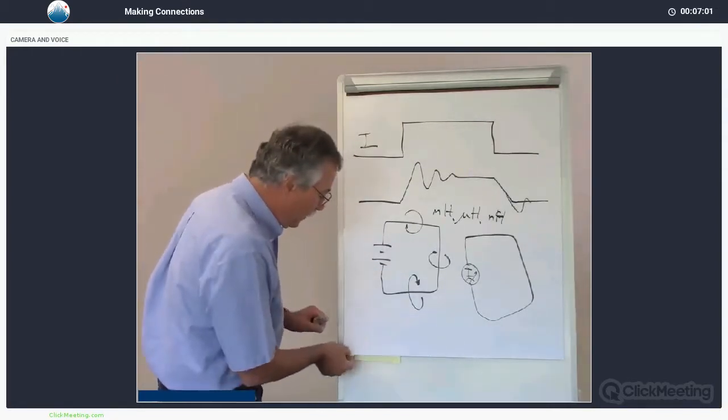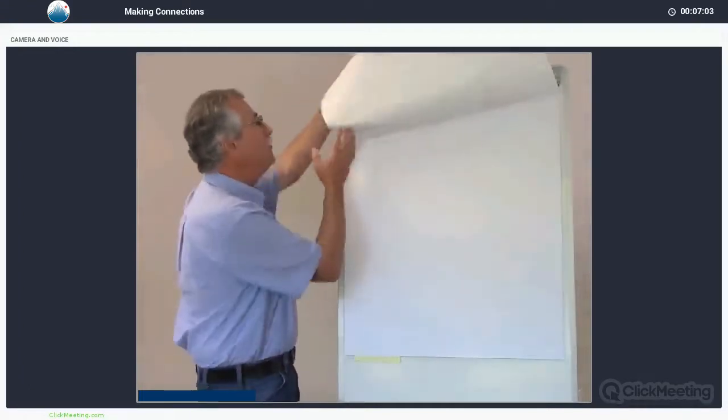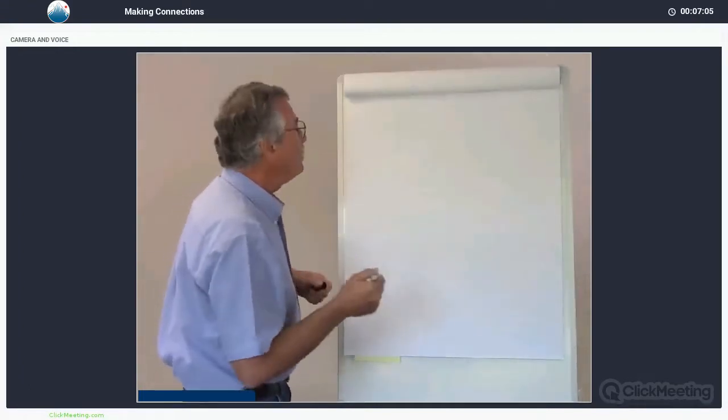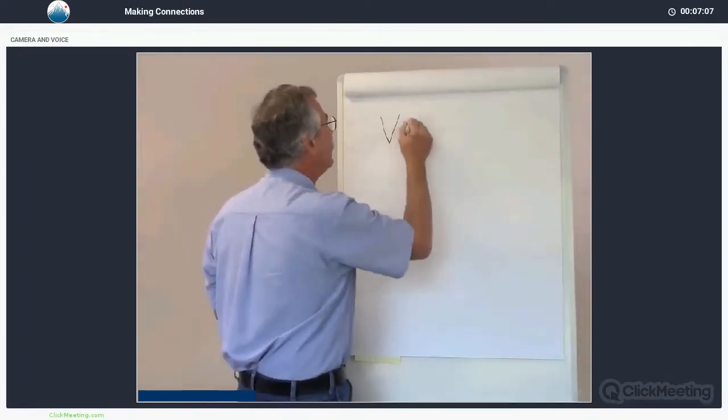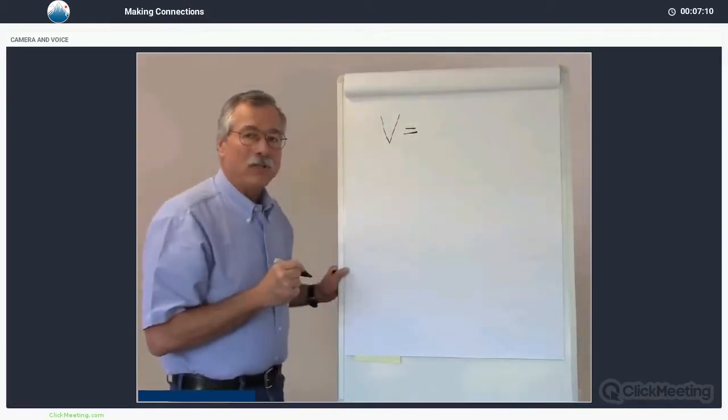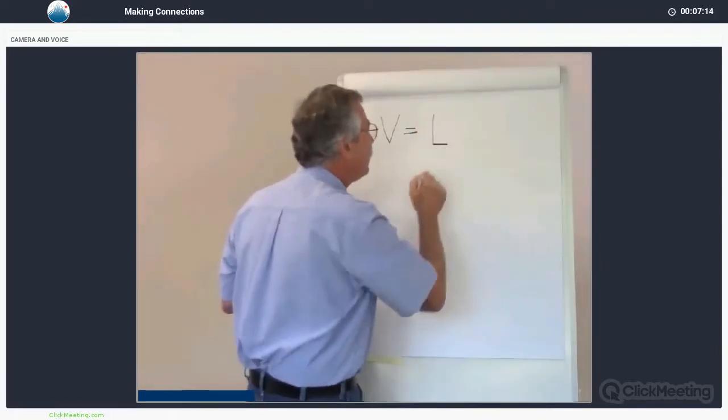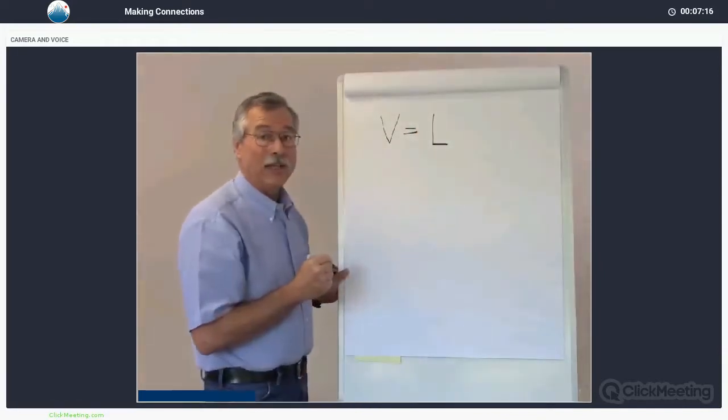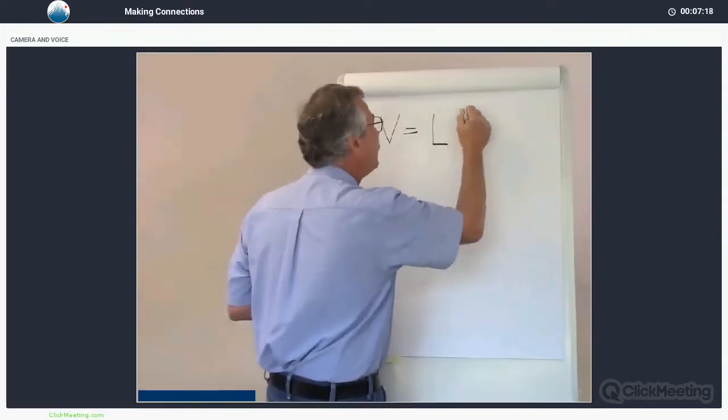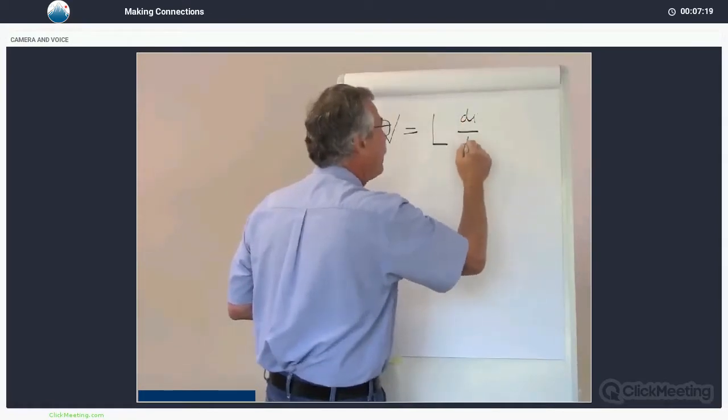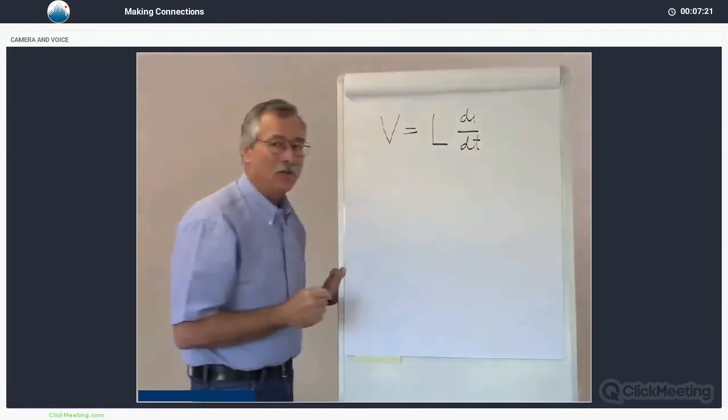There is a formula and it's the only one we're going to throw at you today that is extremely important. The amount of voltage that we induce in a circuit is equal to the amount of inductance, L for Lenz, and the speed of the change of the current.